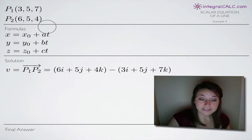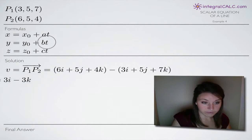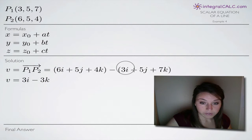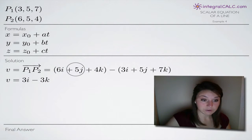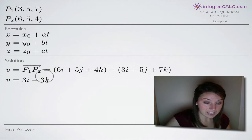So that's the way that we set up our vector equation, and that's the vector that goes from the point p₁ to p₂. And when we simplify that, we subtract 3i from 6i, so we're left with 3i. We subtract 5j from 5j, so we end up with 0j and you can see that disappears here in our vector. And we subtract 7k from 4k, so we end up with -3k.